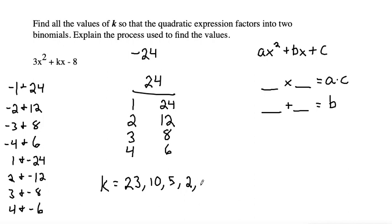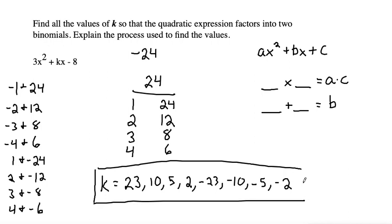1 and negative 24 is negative 23. 2 and negative 12 is negative 10. 3 and negative 8 is negative 5. And 4 and negative 6 is negative 2. So k could be 23, 10, 5, 2, -23, -10, -5, or -2.